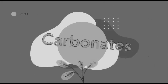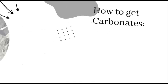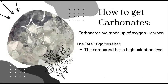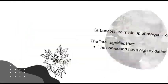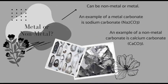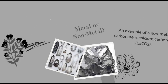Next topic: carbonates. How do you get carbonates? Carbonates are made up of oxygen and carbon. The -ate in carbonates signifies that the compound has a high oxidation level. Are carbonates metals or non-metals? Carbonates can be either non-metal or metal. An example of a metal carbonate is sodium carbonate. An example of a non-metal carbonate is calcium carbonate.